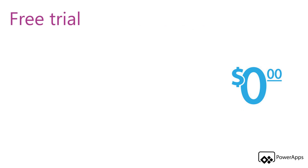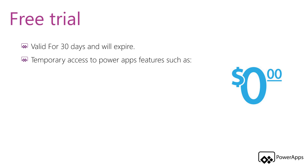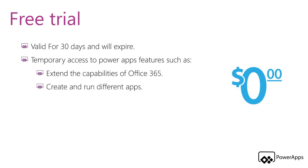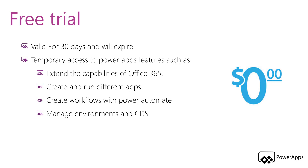Starting with the free trial plan — from its name, it is completely free. The PowerApps trial plan gives you PowerApps Plan 2 for 30 days, giving you access to the different PowerApps features. After 30 days it will expire; it is only temporary access. These features include extending the capabilities of Office 365 such as SharePoint Online, Excel, and Teams. You can create and run different apps, create workflows with Power Automate, and manage environments and Common Data Service.